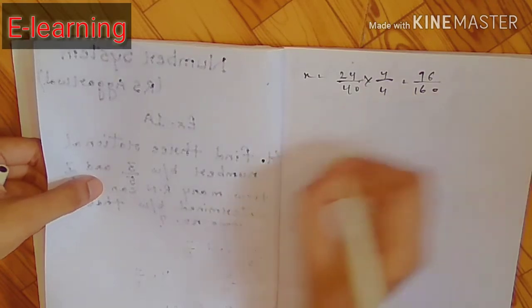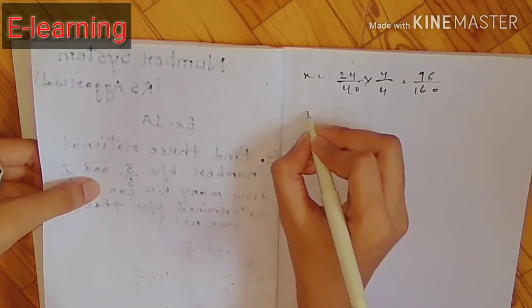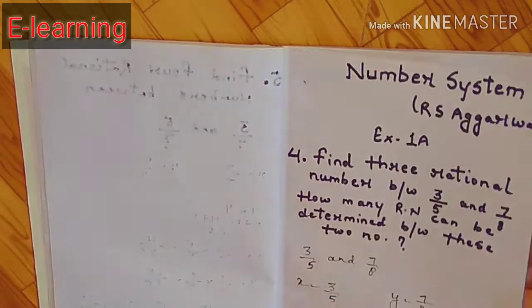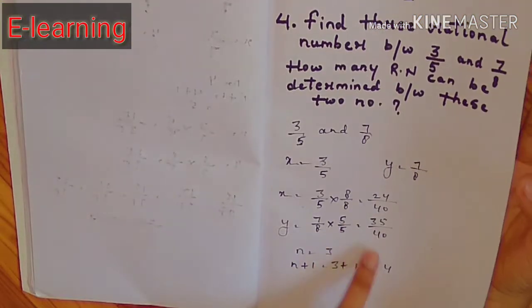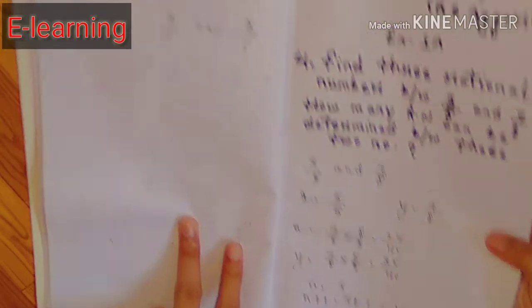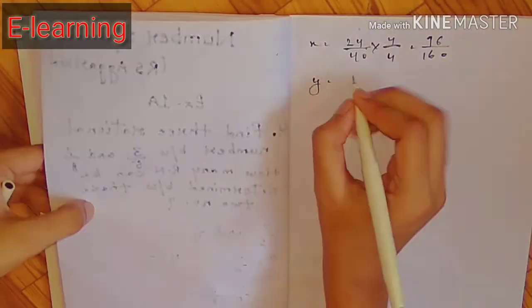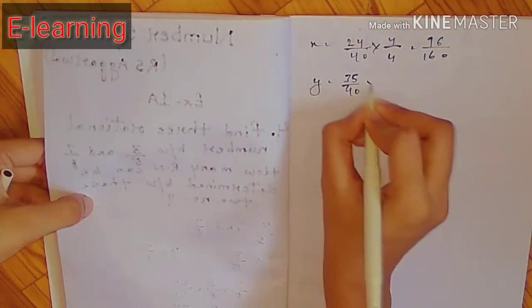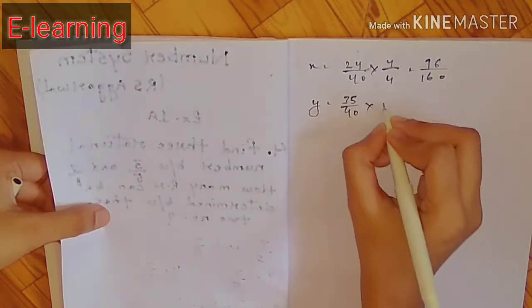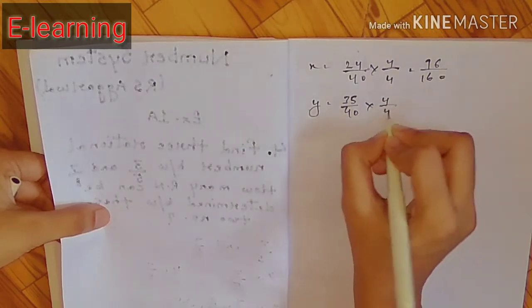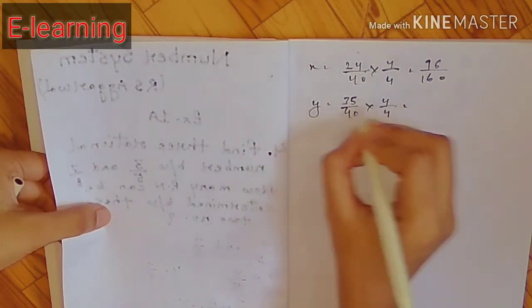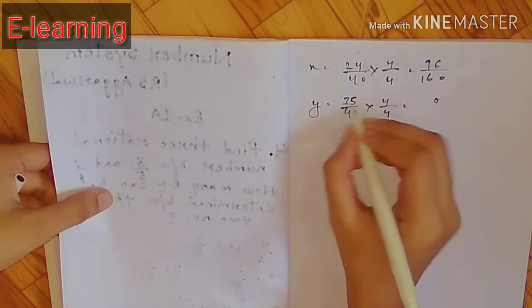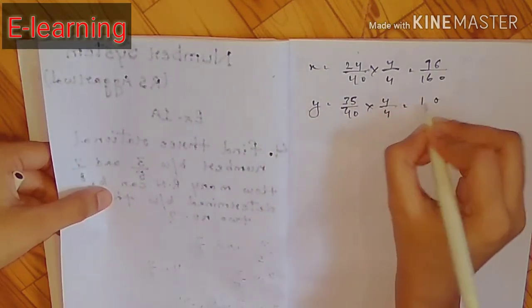Same y के लिए: y की value 35/40 थी। 35/40 में n की value 4 put करके: 35×4 = 140 और 40×4 = 160। तो y = 140/160 हो जाता है।